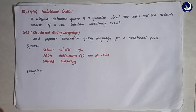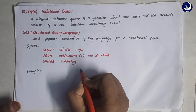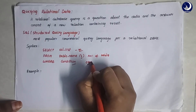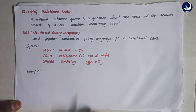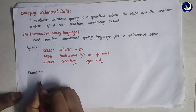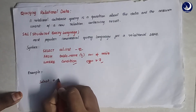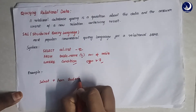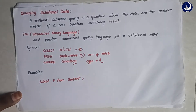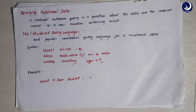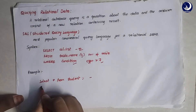Here comes the WHERE condition, where you actually specify the filtering condition. In my example the filtering condition is that I want the students whose CGPA is greater than 7, so in the WHERE clause I will be using CGPA greater than 7 as my condition. Let me give you some examples.